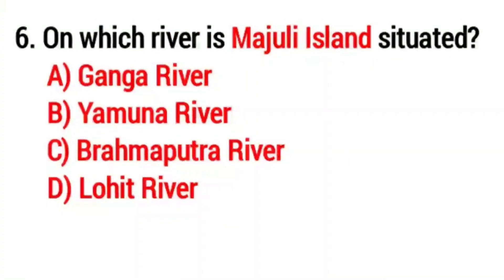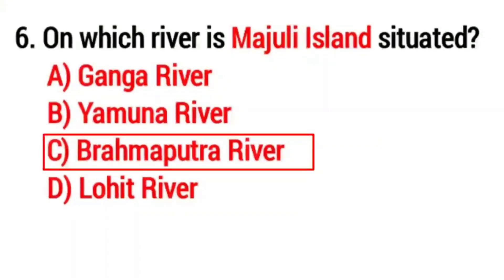Question No. 6. On which river is Majoli island situated? Answer Option C: Brahmaputra river.